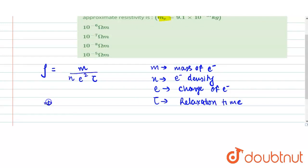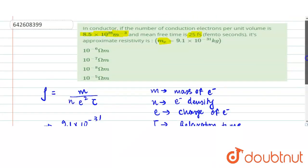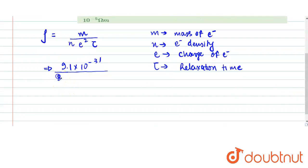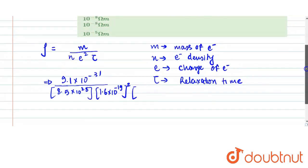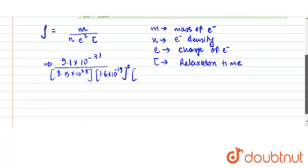So we are given all these values: mass is 9.1 × 10⁻³¹ kg, charge density n is 8.5 × 10²⁸, into charge of the electron which is 1.6 × 10⁻¹⁹ square, into relaxation time which is 25 femtoseconds.